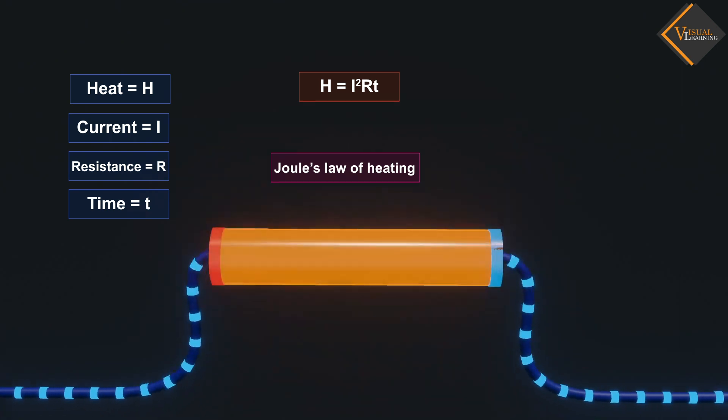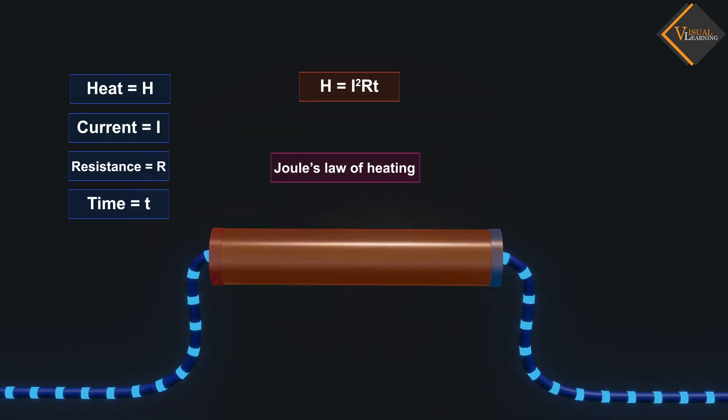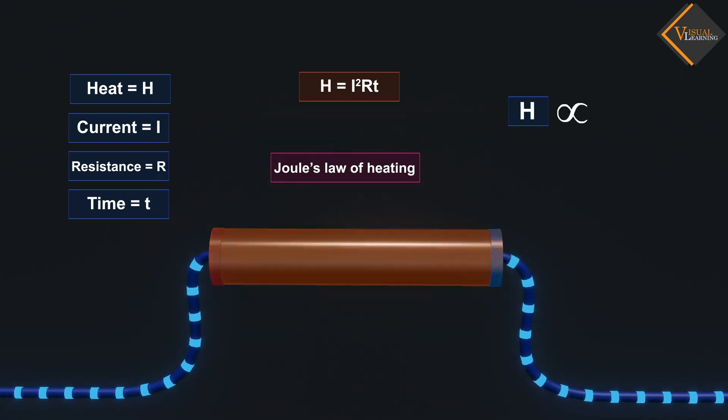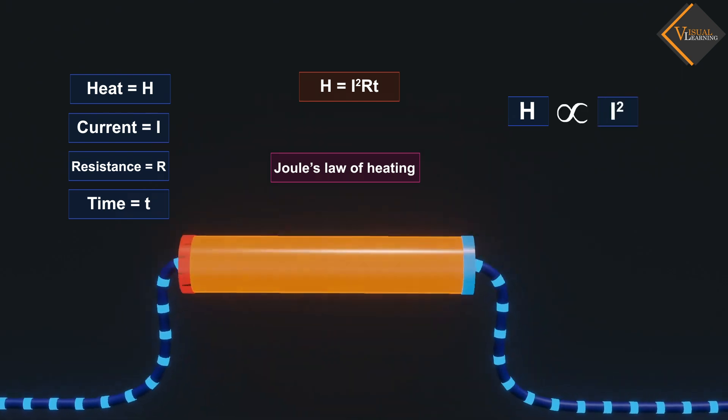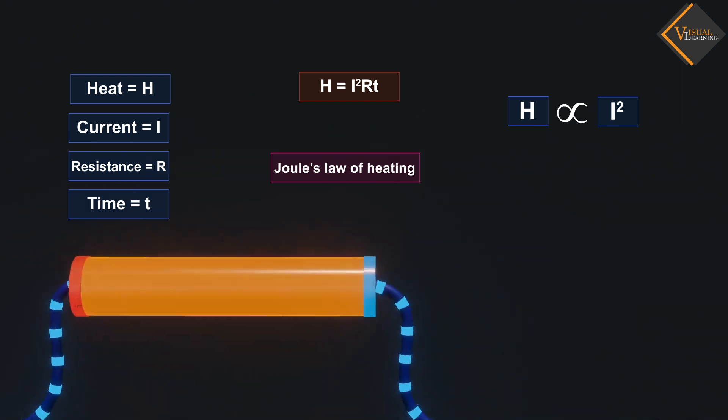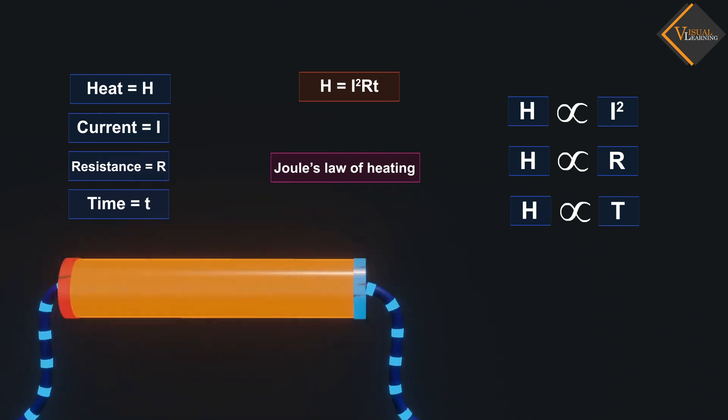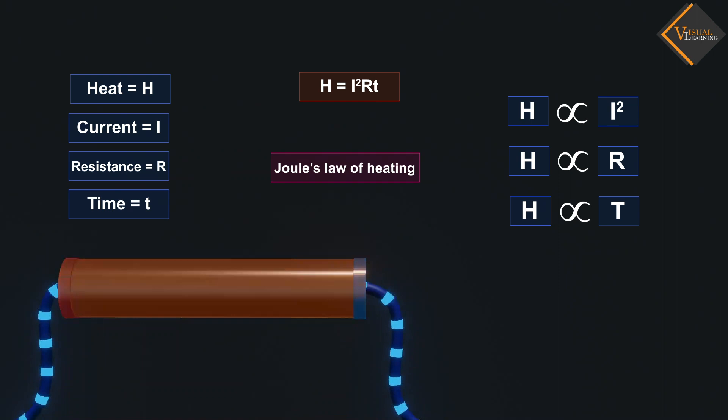The law implies that heat produced in a resistor is directly proportional to the square of current for a given resistance, directly proportional to resistance for a given current, and directly proportional to the time for which the current flows through the resistor.